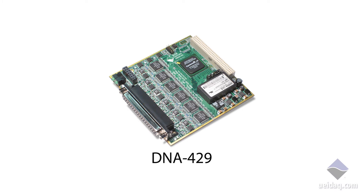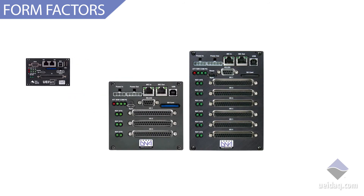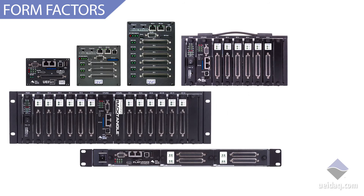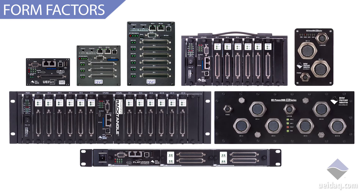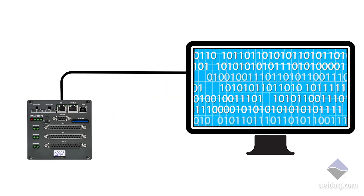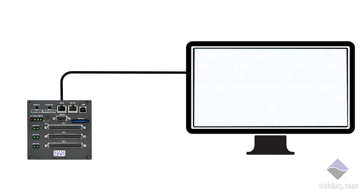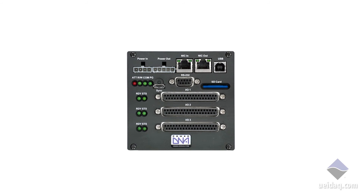ARINC 429 is supported out of the box and ready to go on many different UEI form factors: UEI net, UEI cubes, racks, flat racks, mill racks, mill cubes. These all operate in either tethered mode or untethered mode. Tethered mode requires a computer to be running the program. Untethered mode is a truly autonomous embedded device capable of recording or communicating ARINC 429.